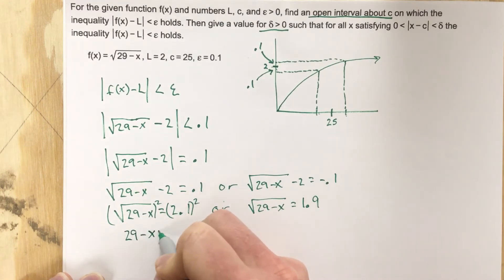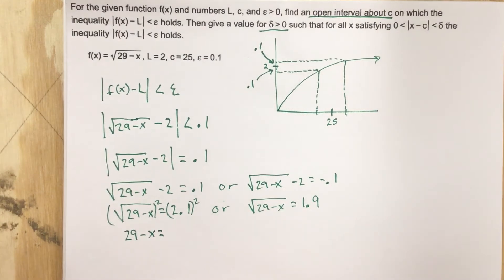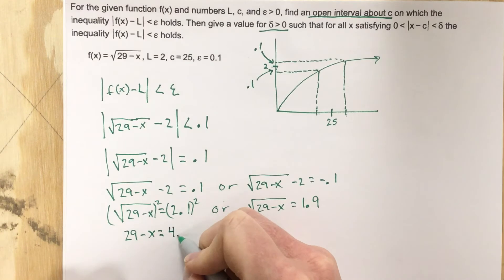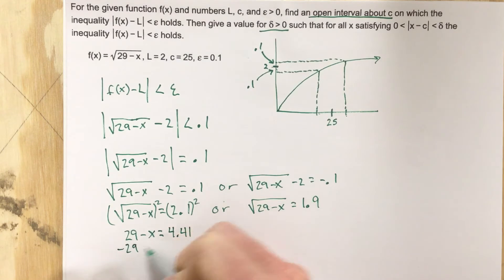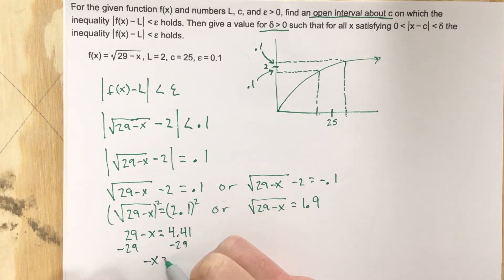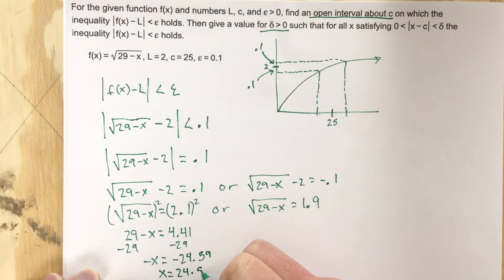we get 29 - x = 2.1². 2.1 squared is 4.41. Then we'll subtract the 29, so we get -x = 4.41 - 29, which is -24.59, so that means x = 24.59.